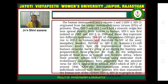The Human Immunodeficiency Virus 1 and 2, that means HIV-1 and HIV-2, originated from the simian immunodeficiency virus, SIV, of primates. HIV-1 and HIV-2 each had a zoonotic origin but now spread directly from human to human. HIV-1 was first isolated in 1983 and HIV-2 in 1986, and the SIV of chimpanzees gave rise to HIV-1 in humans, and the SIV of the sooty mangabey gave rise to HIV-2 in humans.